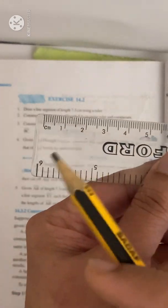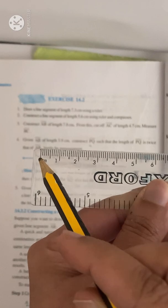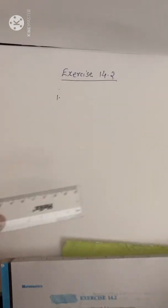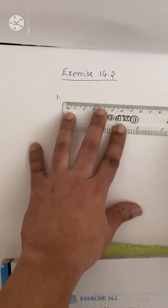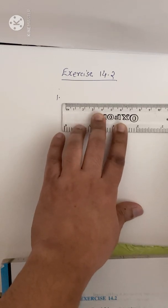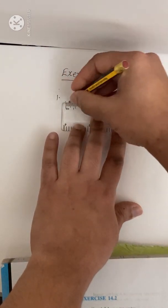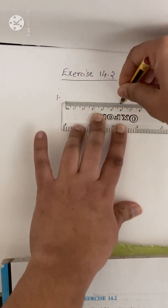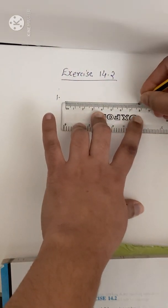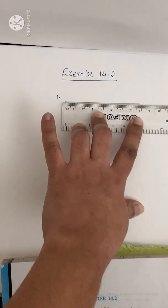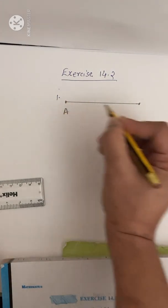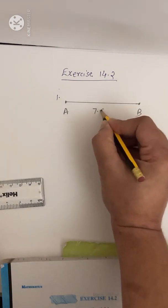So take your ruler. Here they are not asked us to construct using a compass. We can use the ruler and mark a point first, because a line segment has two endpoints. From there you have to mark 7.8. You have to look and mark correctly. Give a name for your line segment — let it be A, B — and write 7.8 cm.